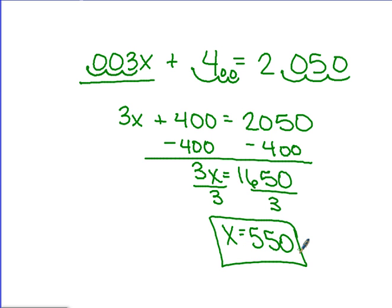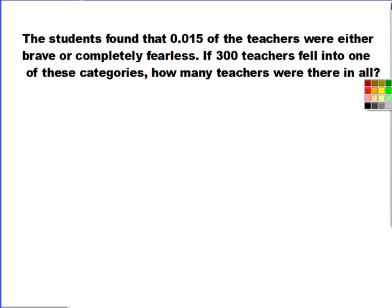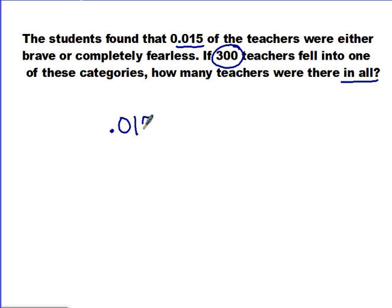We're going to do a couple of examples together, then have you finish one on your own. The first problem: the students found that fifteen thousandths of the teachers were either brave or completely fearless. If 300 teachers fell into one of these categories, how many teachers were there in all? We have fifteen thousandths of all the teachers — we're looking for the total number. We know that fifteen thousandths times that total equals 300. So the equation is: 0.015 times T equals 300.